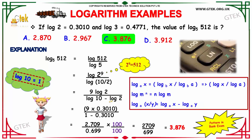Using this property, we write log 10 divided by 2 as log 10 minus log 2. The value of log 2 is given in the question as 0.3010, and the value of log 10 is 1. Doing the computations, we get 2.709 divided by 0.699, which can be simplified by multiplying 100 for both the numerator and denominator.